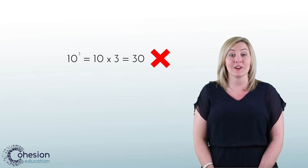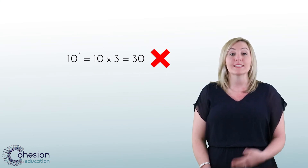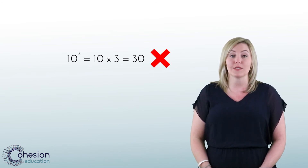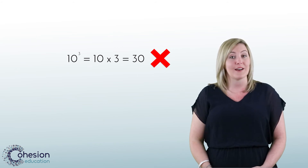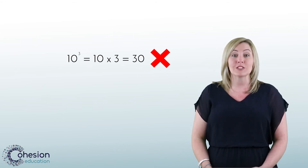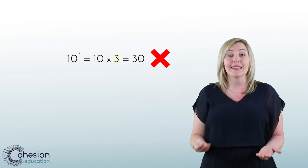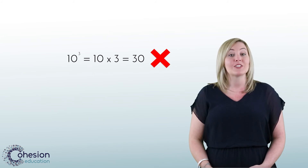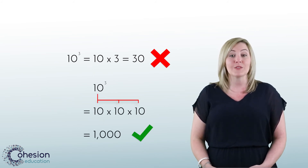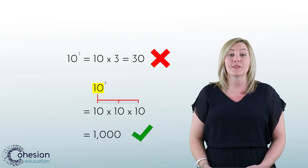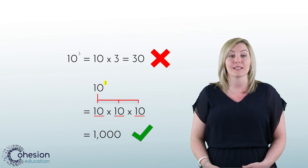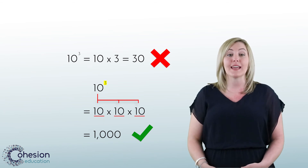A common error that can occur when finding the value of exponents is that students may confuse what to do with the exponent. For example, a student may answer that the value of the third power of 10 is 30 instead of 1,000. This error occurs because students multiply the base and the exponent instead of multiplying the base the number of times the exponent indicates. To address this issue, reinforce that the base is the number being repeatedly multiplied and that the exponent indicates how many times. Be sure to have students write out the exponent.